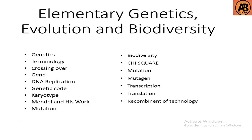Hello guys, welcome to another video. In this course we will learn about elementary genetics, evolution, and biodiversity. We will cover contents such as: what is genetics, terminology related to genetics, crossing over, gene, DNA replication, genetic code, karyotype, Mendel and his work, mutation, biodiversity, chi-square and related math, mutagen, transcription, translation, and recombinant DNA technology. So let's get started.